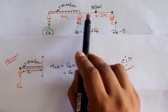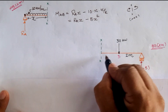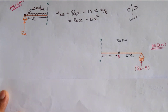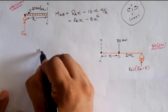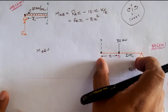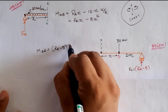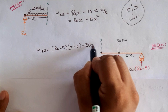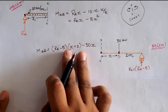Taking section B to D with D as origin, the sectional distance from D is X, and D to B is 2 meters. Using Rc = Ra − 5 and the sign convention, the moment in span B to D equals Rc·(X + 2) in anticlockwise direction (positive on right-hand side), giving (Ra − 5)(X + 2), minus 30·X for the 30 kN load (clockwise, negative). So the moment in B to D is (Ra − 5)(X + 2) − 30X.